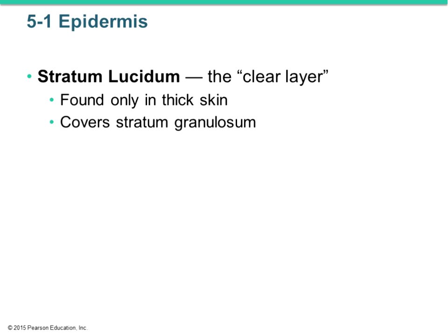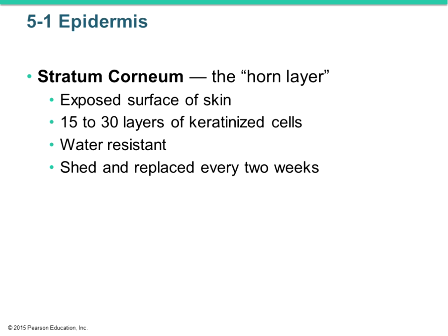The stratum lucidum is found only in thick skin — you will not find it in thin skin. It's the clear layer sitting on top of the stratum granulosum. Then the fifth layer, the stratum corneum, is also called the horn layer. It's your exposed surface of the skin — typically about 15 to 30 layers of keratinized cells. Because these are keratinized and have keratohyalin, they're water-resistant, very strong, and tough.